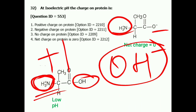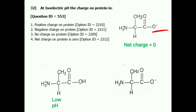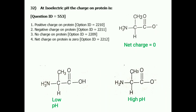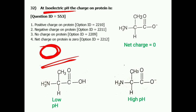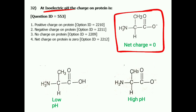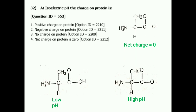If I make the pH low, the H+ concentration increases. This proton will interact with the negative group, making the amino acid carry a positive charge of plus 1. If I make pH high, I increase the concentration of OH negative. In this case, OH negative interacts with the amino group, producing NH2, and the net charge becomes minus 1.